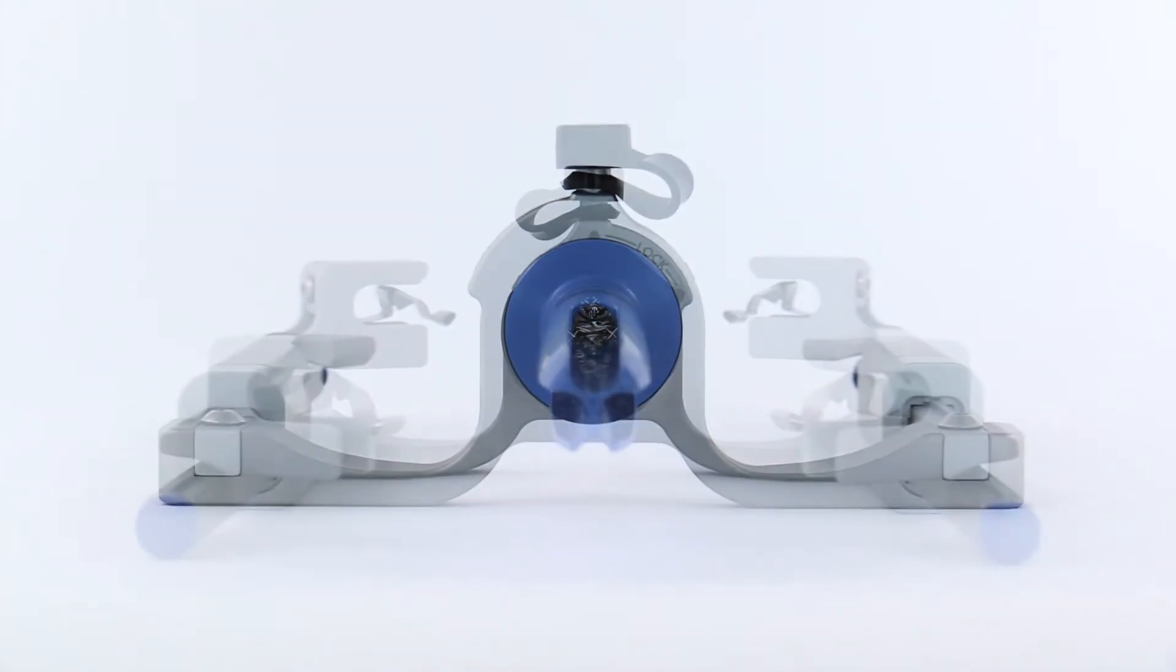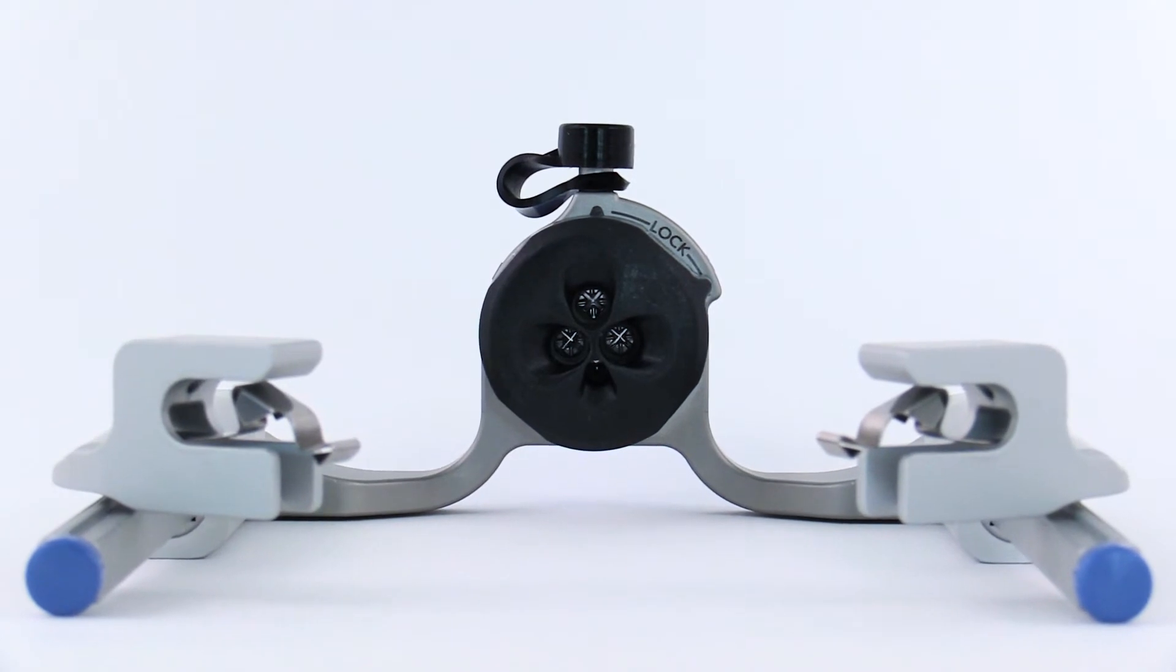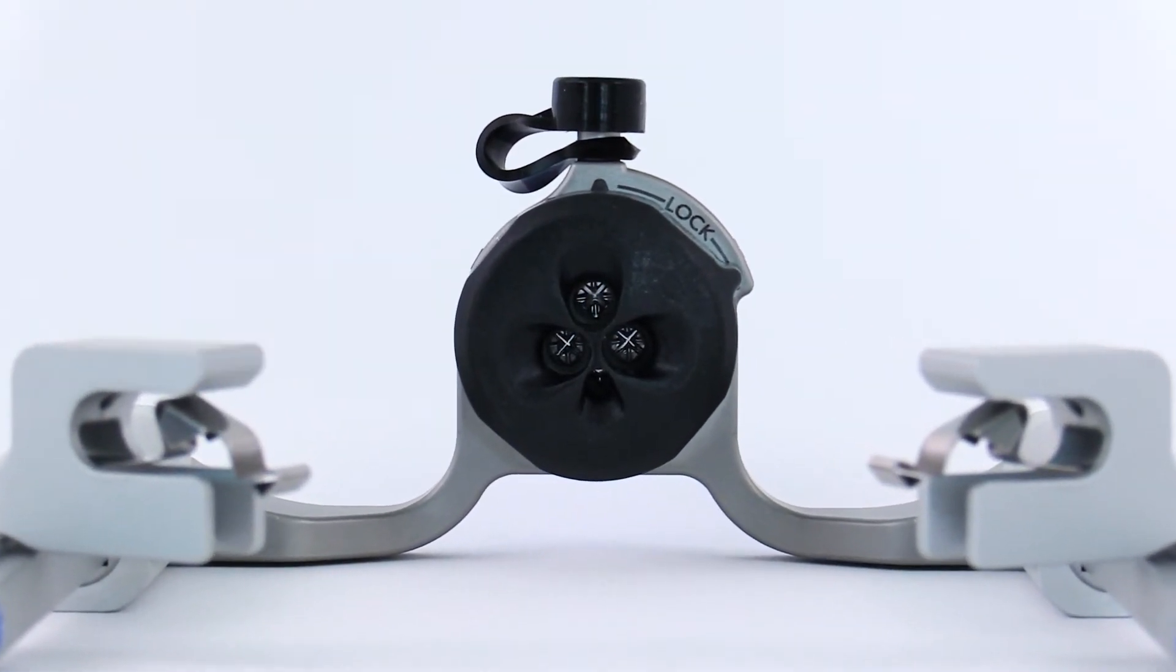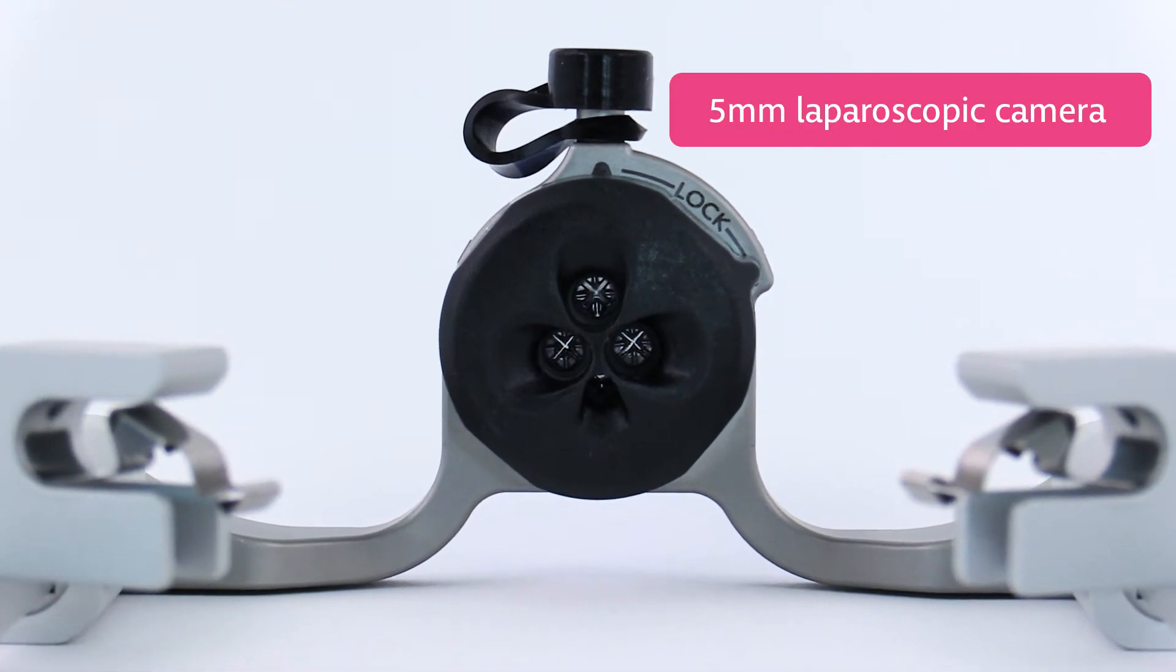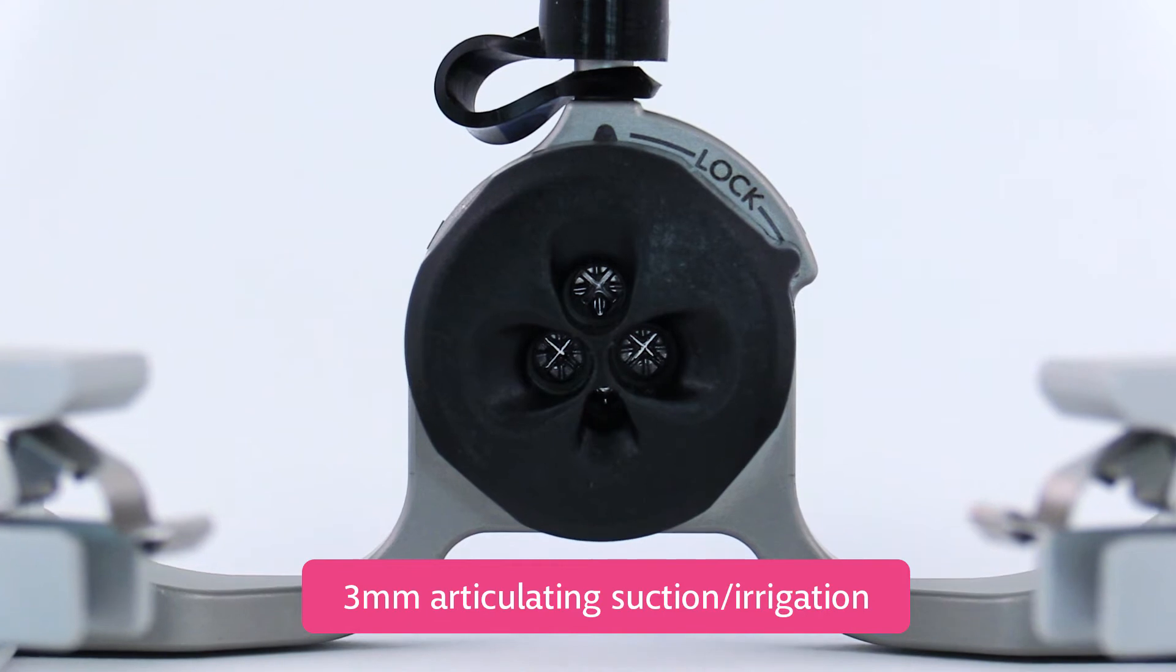Once stabilized inside the trocar, the introducer's four access ports can accommodate various devices. There are two lateral ports for the five millimeter Symphonics instruments, a superior port for a five millimeter laparoscopic camera, and an inferior port for suction and irrigation.